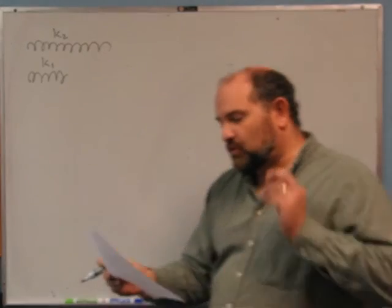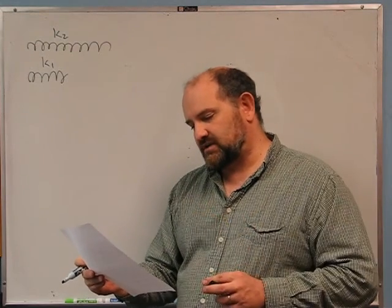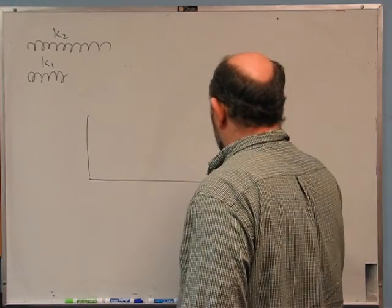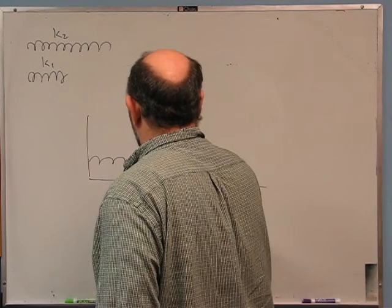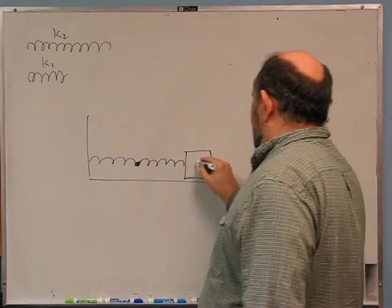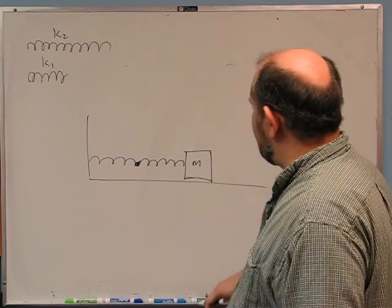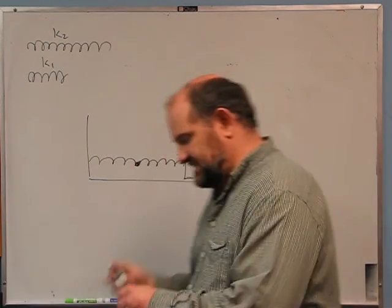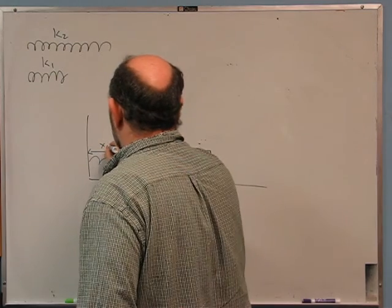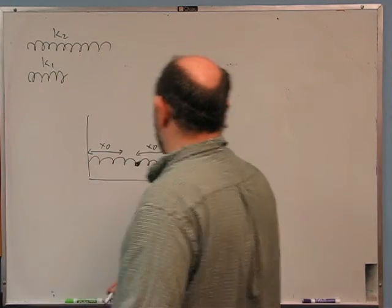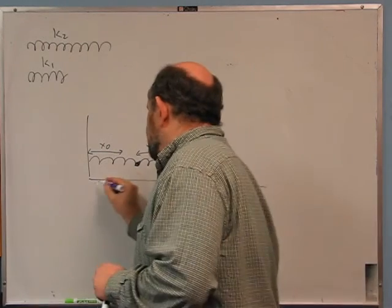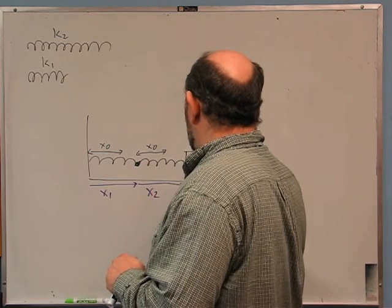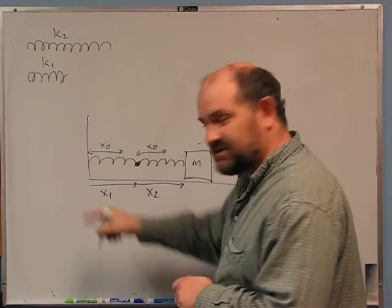There's a hint: approach this by modeling the double-length spring as two of the normal-length springs connected together, where at their connection point there's a small massless bead. So I'm going to think about two single-length springs with a massless bead between them and a mass at the far end. I need to set up some variables: x₀ is the equilibrium length of each spring, x₁ is the length of spring 1, and x₂ is the length of spring 2.